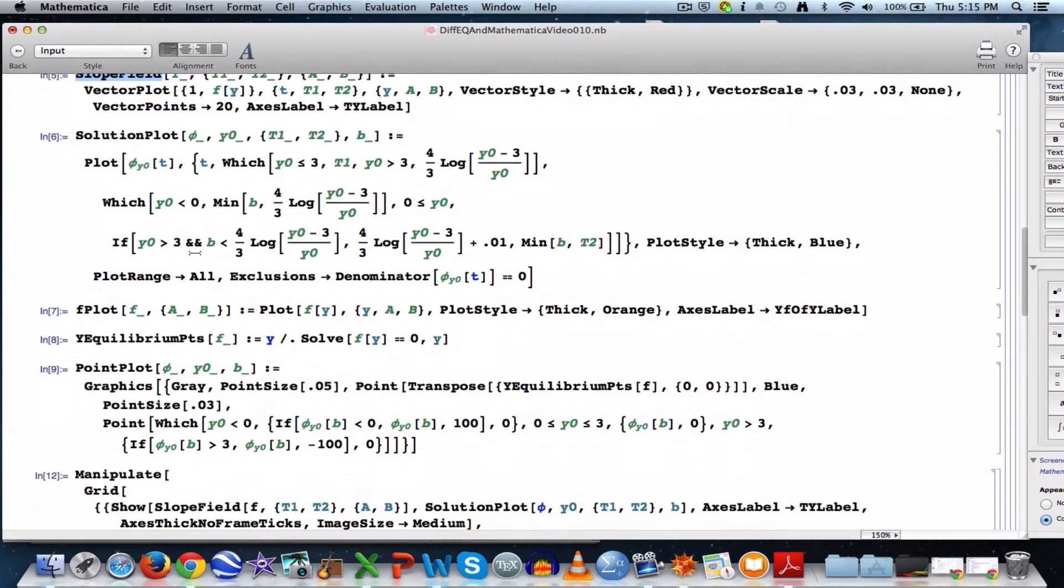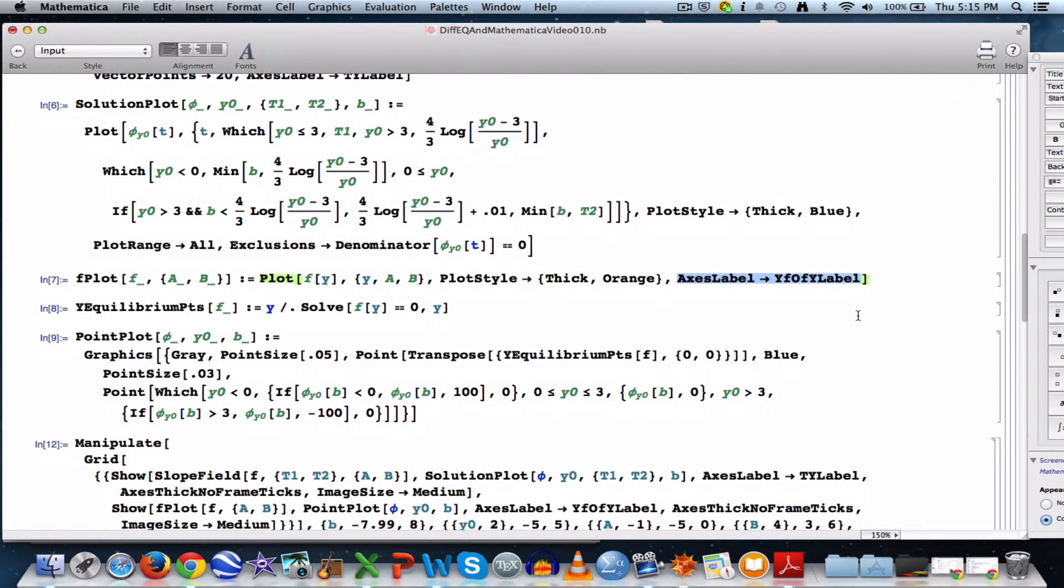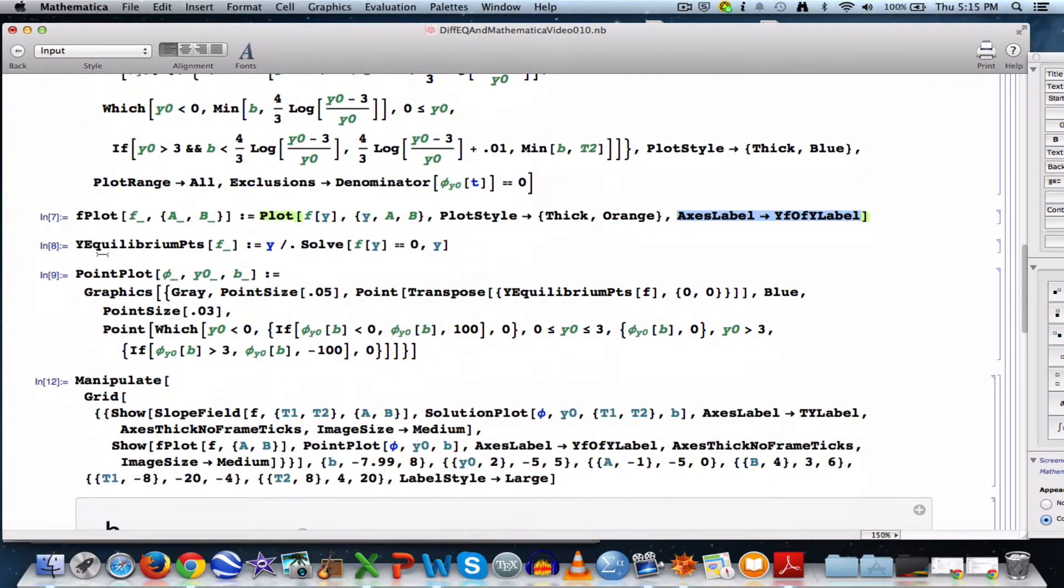Let me skip over the solution plot for the moment. Let's see, what does f plot do? That plots the right-hand side function with the plot command. Makes it orange and thick. Labels the axes y f of y.